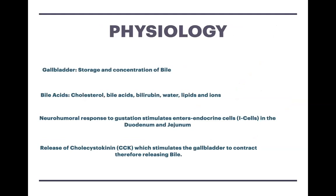Let's discuss the physiology. The function of the gallbladder is purely to store and concentrate the bile. Bile is a fluid composed of several components including cholesterol, bile acids, bilirubin, water, phospholipids, and ions. To get bile from the gallbladder to the duodenum, this is known as the neurohumoral response, which occurs when we eat food during gustation. The neurohumoral response stimulates enteroendocrine cells known as I cells, found in the duodenum and jejunum, and they secrete a hormone known as CCK — cholecystokinin — which causes the gallbladder to contract and releases bile through the ducts directly into the duodenum.